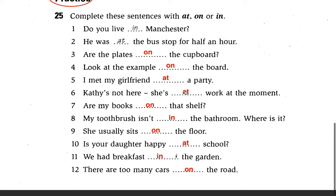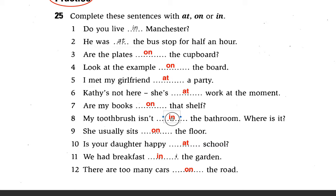Number seven: Is my book on that? 'On' is the answer — preposition of place. Number eight: My toothbrush isn't in the bathroom. Where is it? 'In' is the answer — preposition of place.